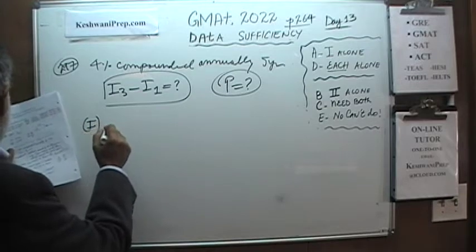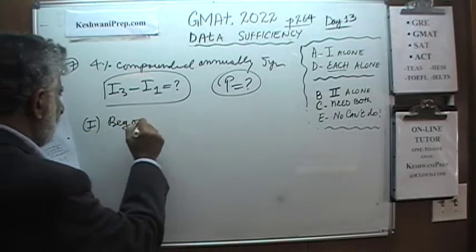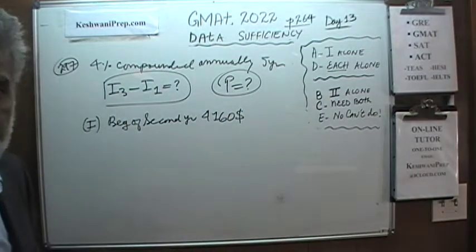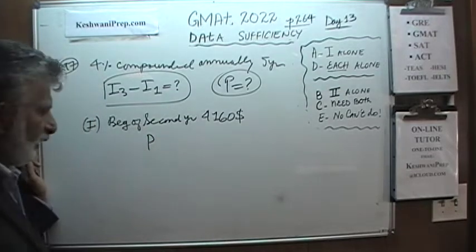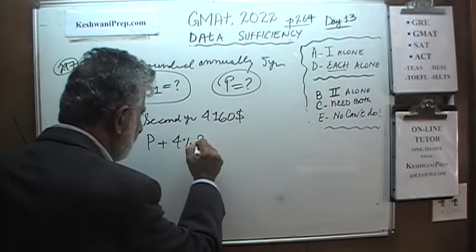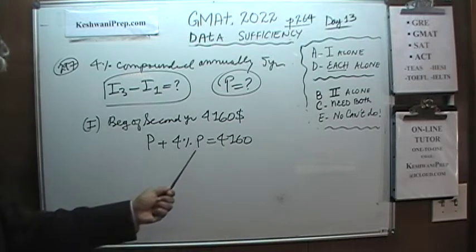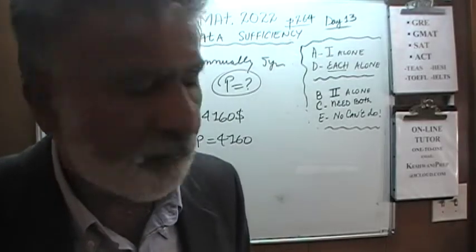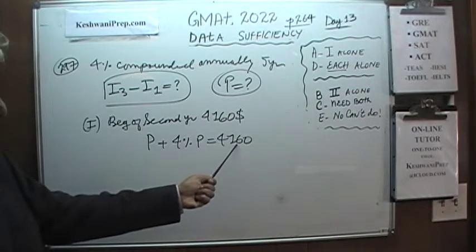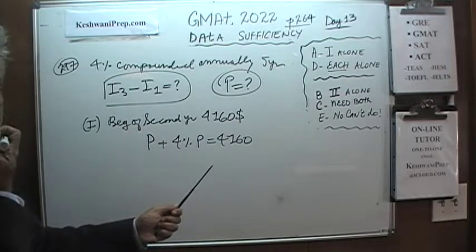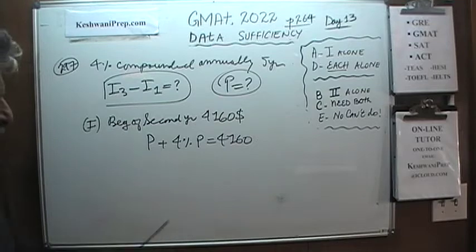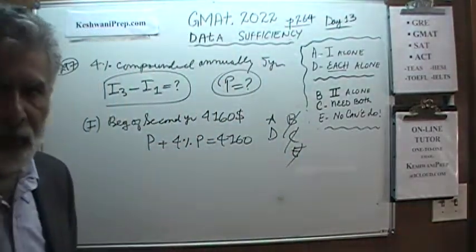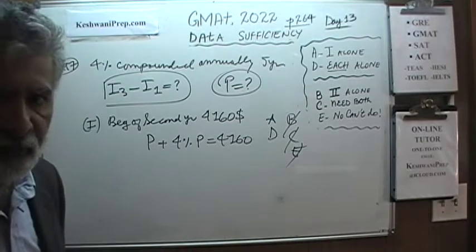The first statement tells us that at the beginning of the second year — which is the same as the end of the first year — we had $4,160. This means P plus 4% of P must equal $4,160. If we know this equation, we can solve for P. Once we have P, we know we are earning 4%, so we can figure out how much interest we earn in the third year and the first year. The first statement is quite enough to figure out the principal and the interest amounts.